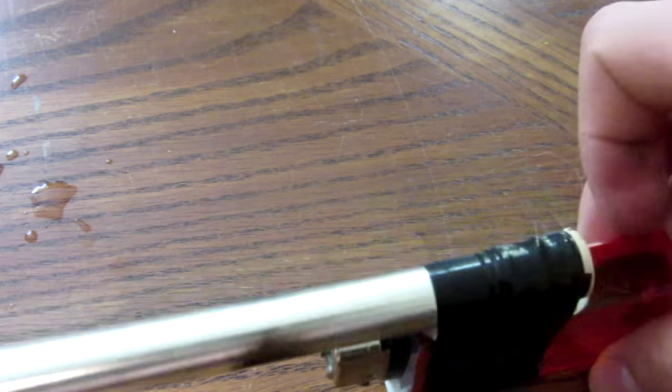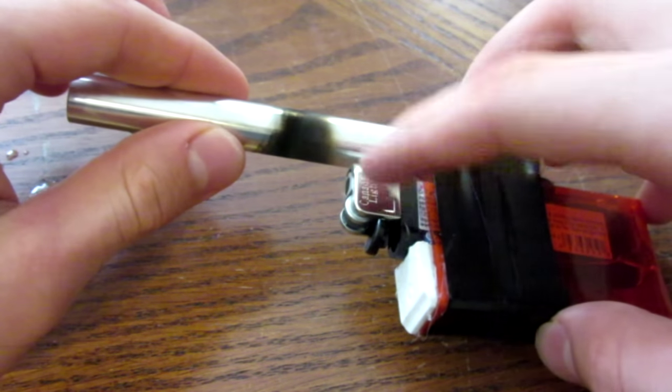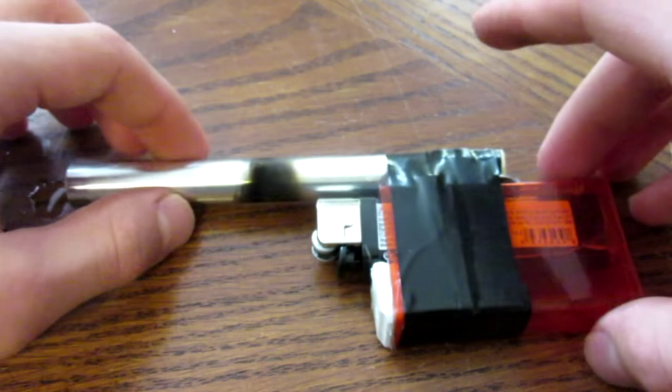As you can see, the barrel gets pretty burnt. And it doesn't get too hot because of the water. As you can see, I can touch it. This part of the lighter gets pretty hot, so be careful around there.